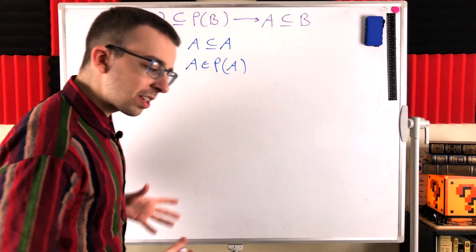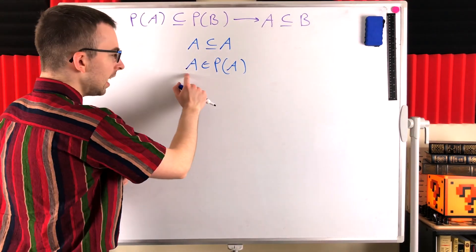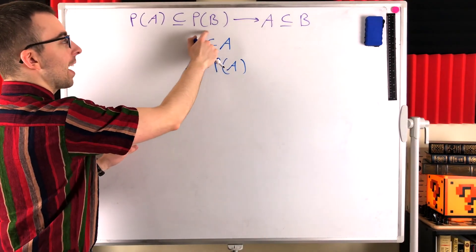Okay, again, we're just taking steps with the information we know. Now we've got into our power set. If A is an element of the power set of A, what do we know that means about A?